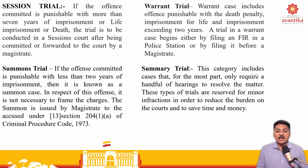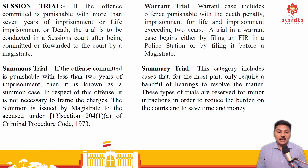In warrant trial, the case includes offenses punishable with the death penalty or lifetime imprisonment exceeding two years. A trial in a warrant case begins either by filing an FIR in the police station or by filing with the magistrate. Moving further to summon trial — if the offense committed is punishable with less than two years of imprisonment, then it is known as a summon case. In respect of this offense, it is not necessary to frame the charges. The summon is issued by the magistrate to the accused under section 13 and section 204 clause 1 of CRPC. Last is summary trial. This category includes cases that for the most part only require a handful of hearings to resolve the matter. These types of trials are reserved for minor infractions in order to reduce the burden on the court and to save money and time.